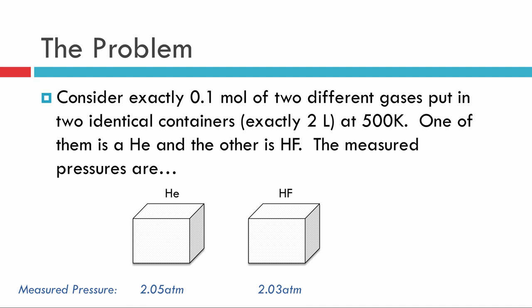The problem goes like this: as a way to get started, it's good to think about what if we were to put 0.1 mole of two different gases into the same container, two liters in this case, and at the same temperature. The expectation is, if it's an ideal gas, that the pressure would be the same because n, v, and t are all identical.